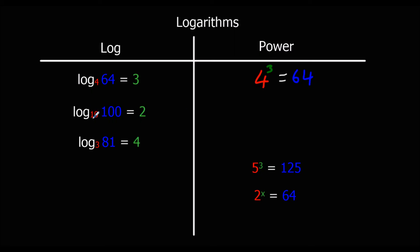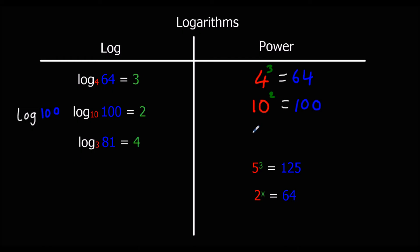Same again here — I've got log base 10 this time. Sometimes if it's log base 10, you will just see it written as log and it will not write the 10 at all; it will just say log 100. If ever you see log by itself, it means log base 10. So the base is 10, the power is 2, and that is equal to 100. So 10 squared is 100, and that's equivalent to log base 10 of 100 equals 2. And again, the base is 3 for this one, the power is 4, so 3 to the power of 4 equals 81.